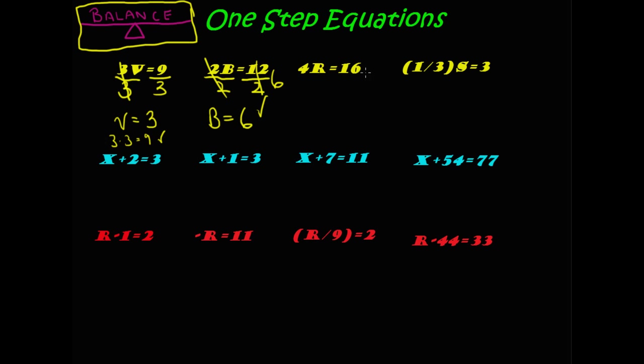Next one. 4r equals 16. Notice, each time we're trying to get the variable by itself. So, in this case, we have to divide each side by 4. And we get these cancel out, and 16 divided by 4 is 4. Now, does that make sense? 4 times 4 is 16. Yes, that's true.